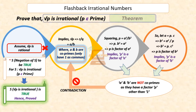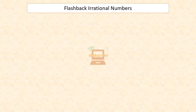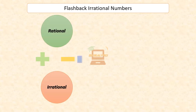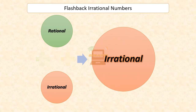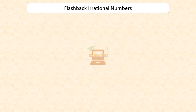We can even use this result as a theorem going forward. We can prove that the sum or difference of a rational and an irrational number is irrational. And the product and quotient of a non-zero rational and irrational number is also irrational. Let us look at a few such examples.